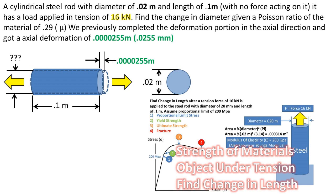We previously completed the deformation portion of the rod in the axial direction in the video Object Under Tension, Find Change in Length. We got an axial deformation of 0.0255 millimeters.